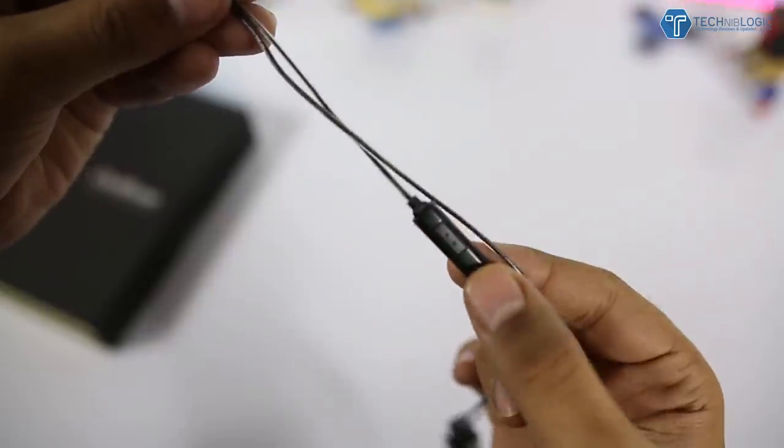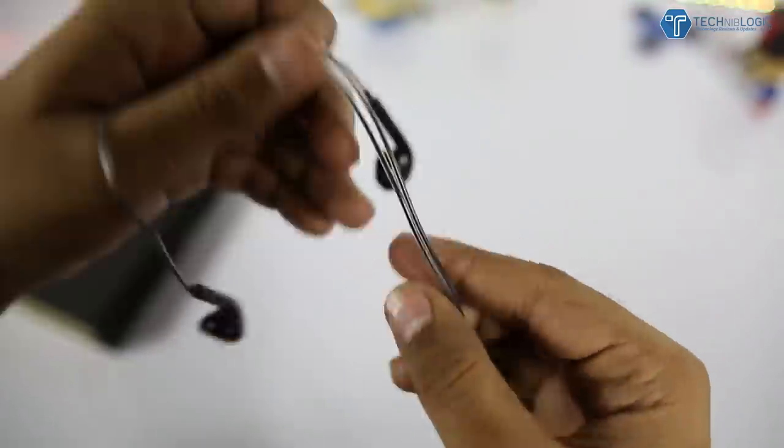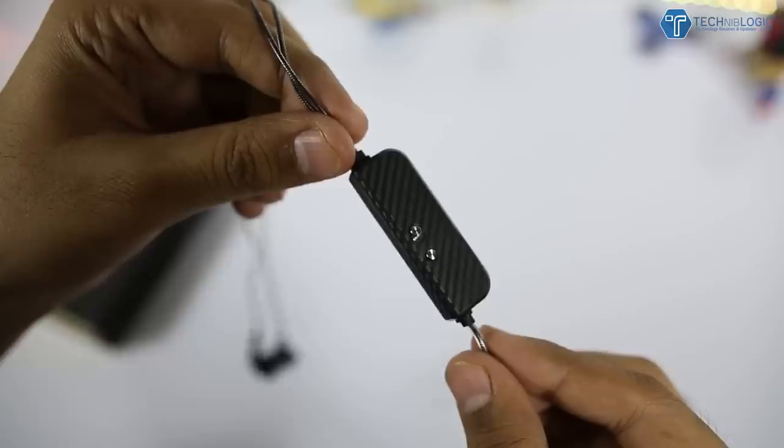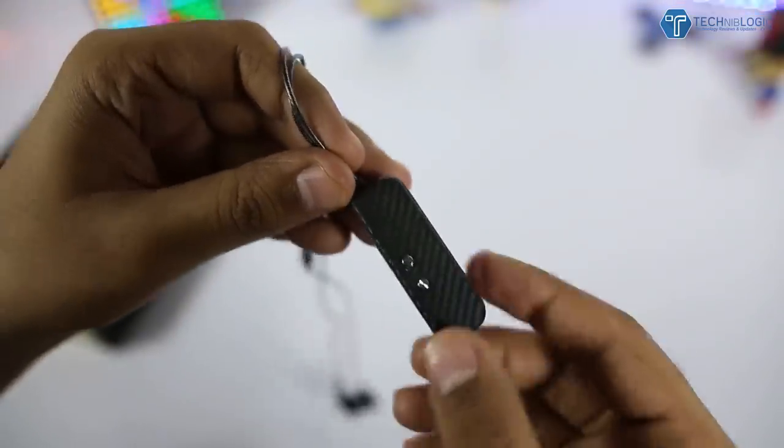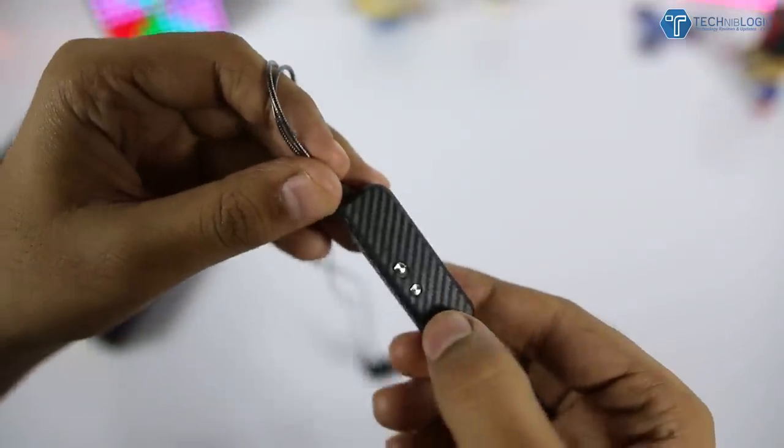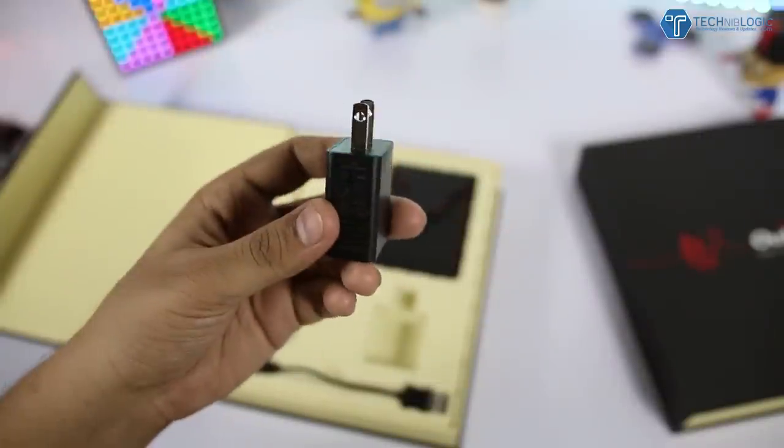After that we get another module which is used to turn on or off that encryption, which I'll explain later in this video. Keeping all this thing aside, we get a power brick using which you can charge these earphones.